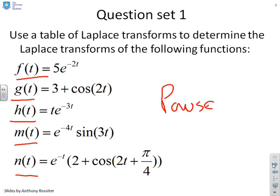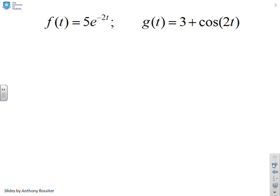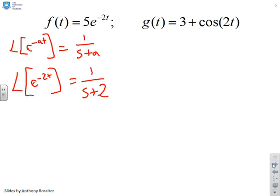Here are the first two then. So f(t) equals 5e to the minus 2t. Now this one comes straight from the table where you'll see that Laplace of e to the minus at equals 1 over s plus a. And therefore, Laplace of e to the minus 2t is 1 over s plus 2. And finally, Laplace of 5e to the minus 2t is going to be 5 over s plus 2.